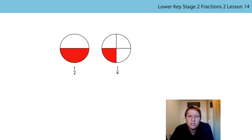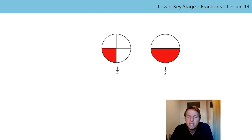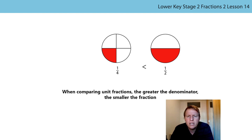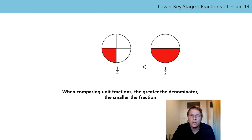If I ask you to put these fractions in ascending order — going from smallest to largest — we would move a half over here. Now these are in ascending order. We can use the 'smaller than' sign, so we can say: one quarter is smaller than one half, or one quarter is less than one half. When comparing unit fractions — remember, that's fractions where the numerator is one — the greater the denominator, the smaller the fraction. Four is the larger number, so that fraction is smaller than the fraction where the denominator is two.